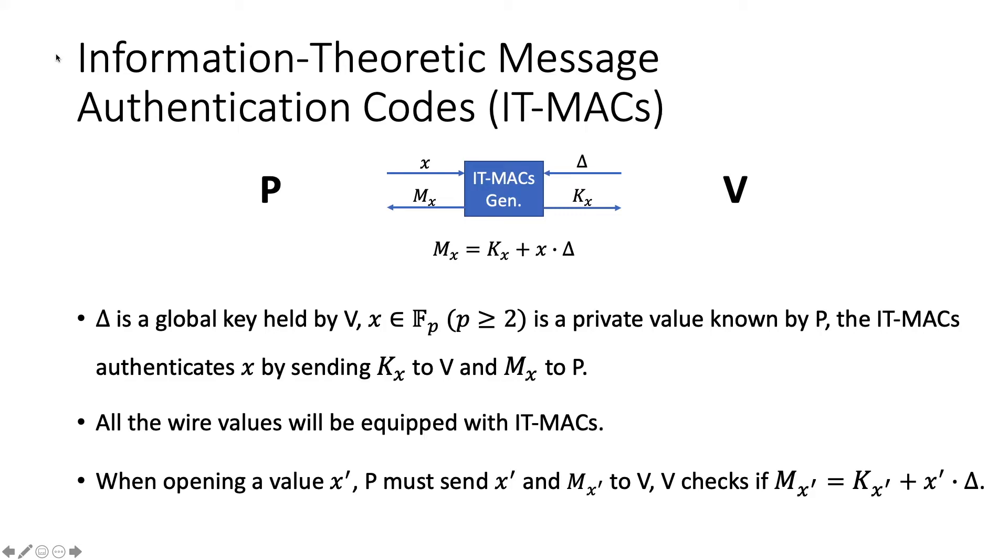The basic element in our protocol is the authenticated value, and authenticated values are authenticated by information theoretic MACs. In this setting, the verifier has a global key delta. When the prover wants to authenticate a value x, it receives the MAC of x, which is mx, and the verifier receives the local key of x, which is kx. It satisfies that mx equals kx plus x multiplied with delta. All the wire values in the circuit will be equipped with the information theoretic MAC.